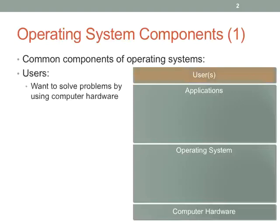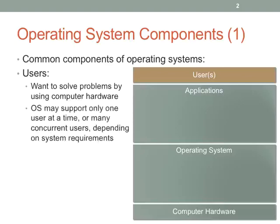The most obvious things in this picture are the users and the computer hardware. Users just want to solve some problems using computer hardware — give a lecture, solve homework, surf the internet. The OS may have a variety of constraints: it may have a single user, no users most of the time, or many users. So you have different constraints that the operating system might need to operate within.